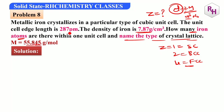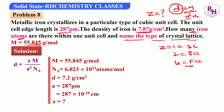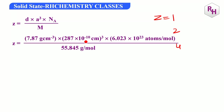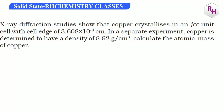For iron: Z = 2, M = 55.845 g/mol, a = 287 pm = 287 × 10⁻¹⁰ cm. Substituting: density = (2 × 55.845) / ((287 × 10⁻¹⁰)³ × 6.023 × 10²³). The exponent becomes 10⁻³⁰ × 10²³ = 10⁻⁷. Calculating: 7.87 × 287 × 6.023 / 55.845 gives approximately 7.87 g/cm³. This is the NCRT textbook problem.